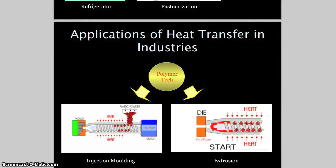Chapter 2 is conduction, Chapter 3 is convection, Chapter 4 is radiation, and the final chapter is heat exchangers — where we apply everything from Chapters 2 through 4. That's all for Chapter 1. Hope you enjoyed it. Thank you!